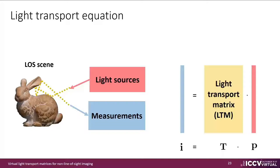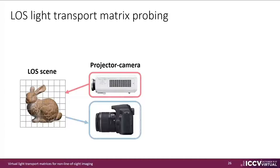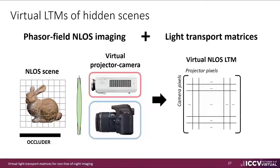Efficient estimation of this light transport matrix has enabled a wide variety of fundamental applications for scene understanding, such as separation of direct and global illumination, or more complex matrix probing operations that enable de-scattering, separation of specific ranges of illumination, or masking certain light paths between objects. These methods typically estimate the light transport matrix using projector-camera setups with aligned pixel arrays that simultaneously illuminate and capture the visible scene. In the resulting LTM, columns represent projector pixels and rows represent camera pixels. Similar to line-of-sight settings, our goal is to estimate light transport matrices in NLOS configurations to provide general understanding of hidden scenes.